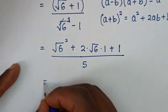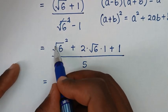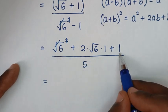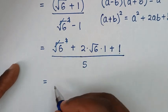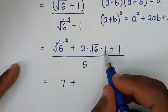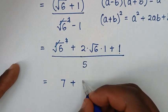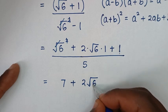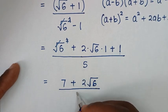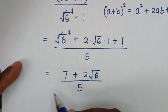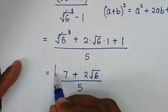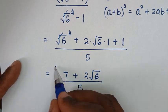Then it will be equal to: in the numerator, square root of 6 squared gives 6, and 6 plus 1 is 7, then plus 2 times 1 is 2 times square root of 6 — so it will be 2 square root of 6. Then over 5. So 7 plus 2 square root of 6 over 5 — this is our final answer.